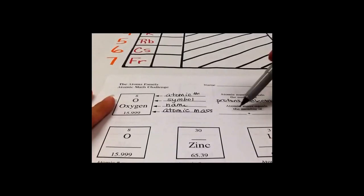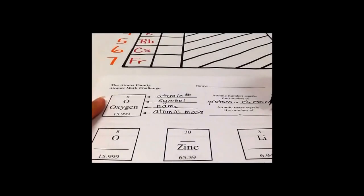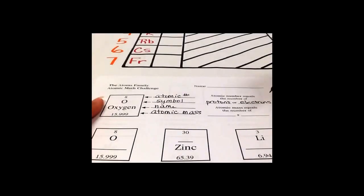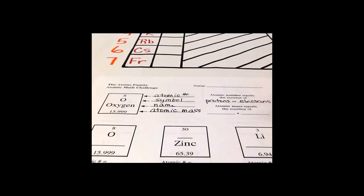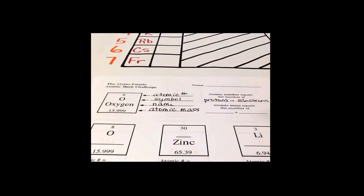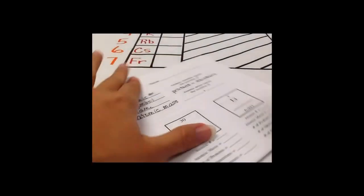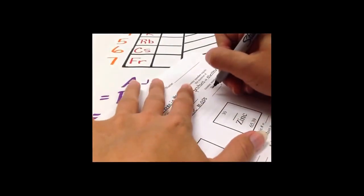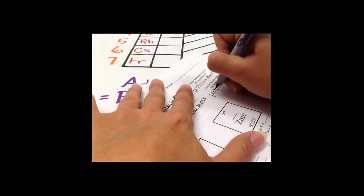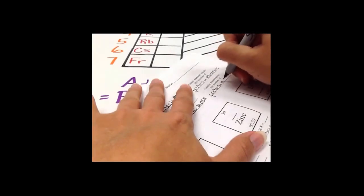And the atomic mass is equal to the number of... whoa, wait a minute. According to Ape Man, I take the atomic mass and I subtract the protons to get my neutrons. But this is asking me what is the atomic mass equal to, not how many neutrons there are.